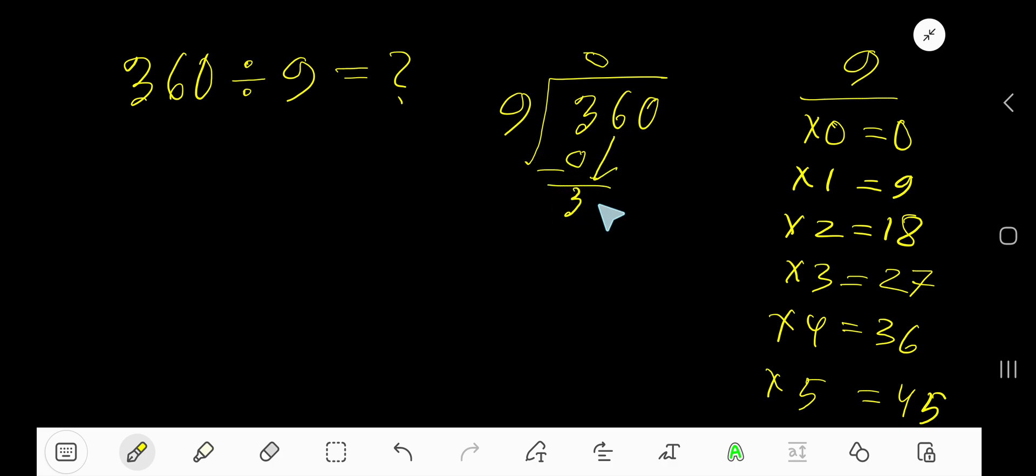Bring down this digit, so 36. 9 goes into 36 how many times? 4 times, right? 4 times 9 is 36. Subtract, 0. Bring down this 0, so 0. 9 goes into 0, 0 times.